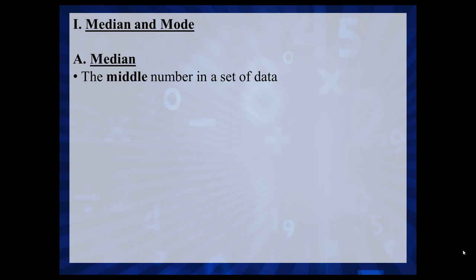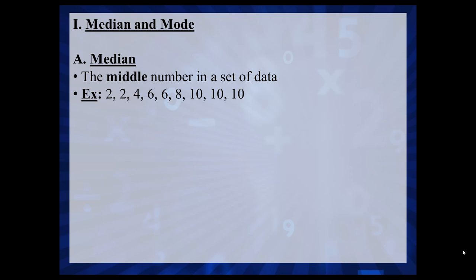The median of a data set is the number that you find in the middle of the data set. For example, let's say we have a data set — 2, 2, 4, 6, 6, 8, 10, 10, 10. These could, for example, be the number of goals scored by a hockey team over 9 games.